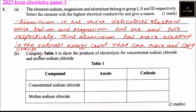Part B: complete table 1 to show the products of electrolysis for concentrated sodium chloride and molten sodium chloride. We have a table here with the compound, concentrated sodium chloride, and molten sodium chloride, showing the anode and the cathode.